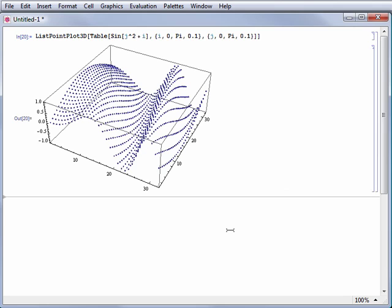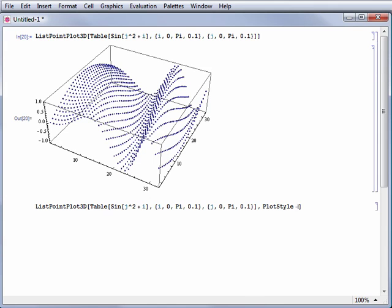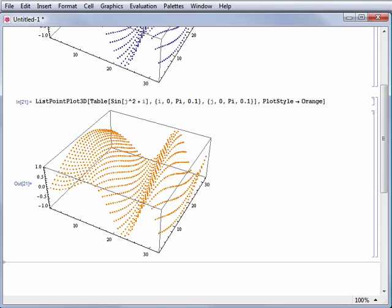Mathematica also lets you change the color of points in 3D plots. The 3D plot here has the default color scheme for the points. You can use PlotStyle to set the color of points generated by ListPointPlot3D. For instance, PlotStyle here is used to change the color of the points to orange.